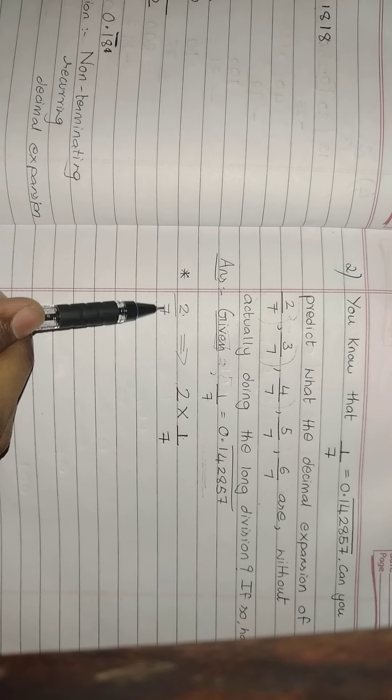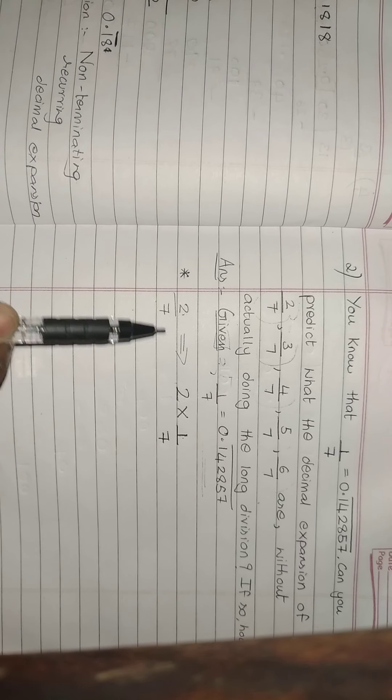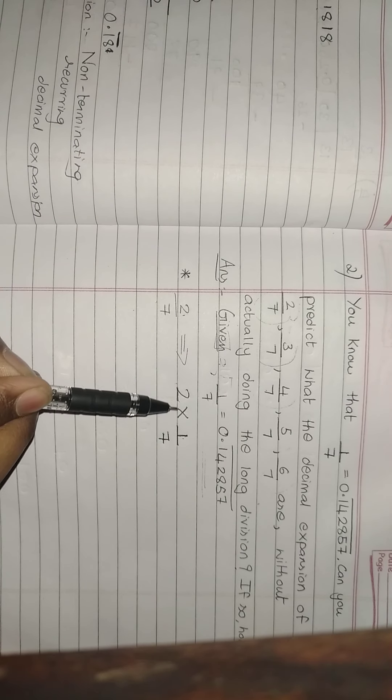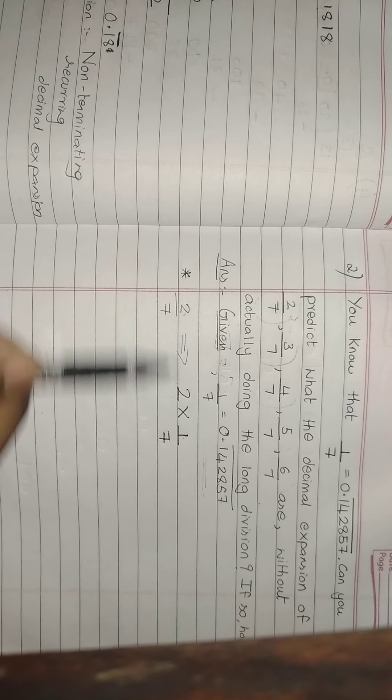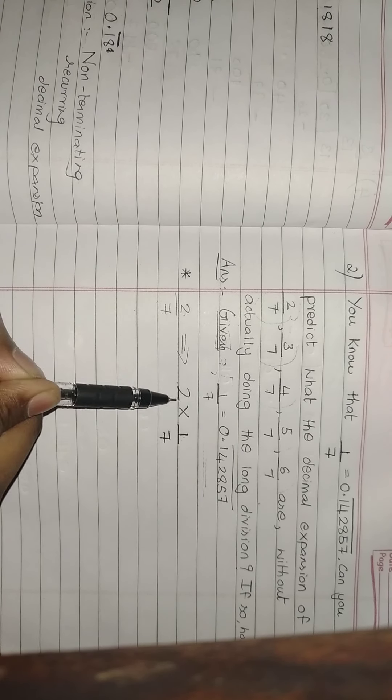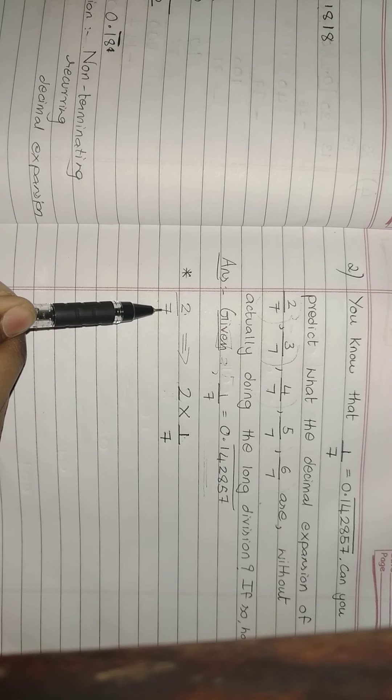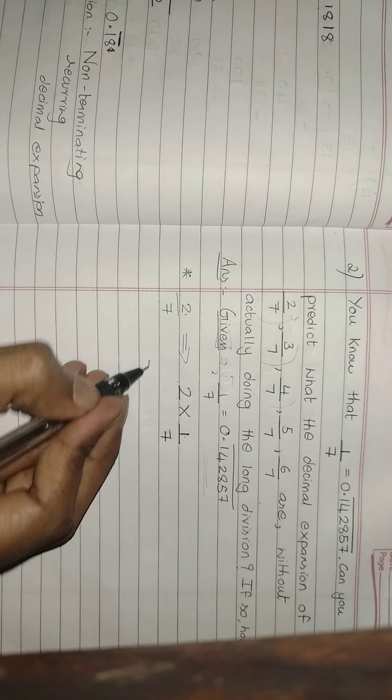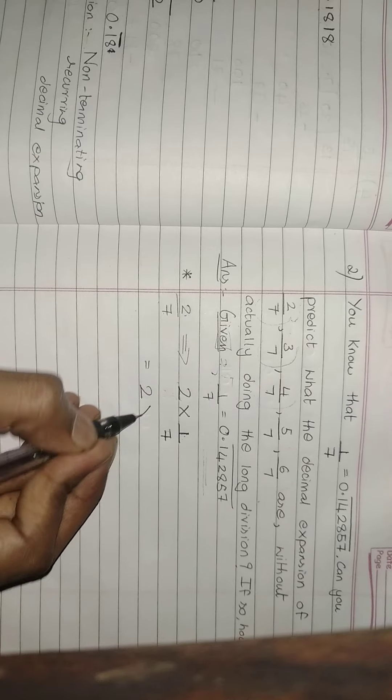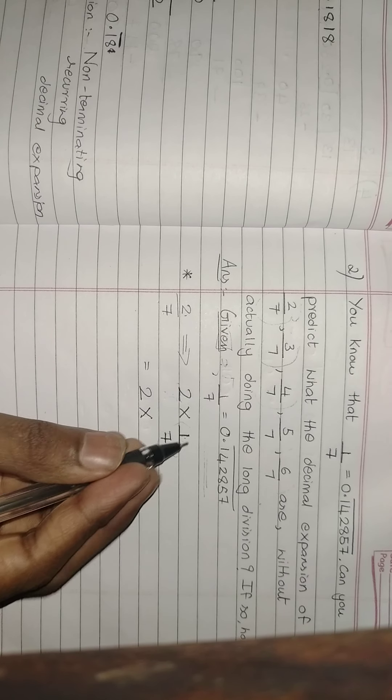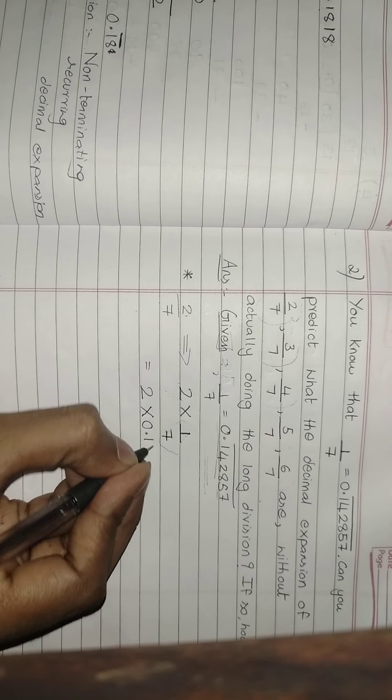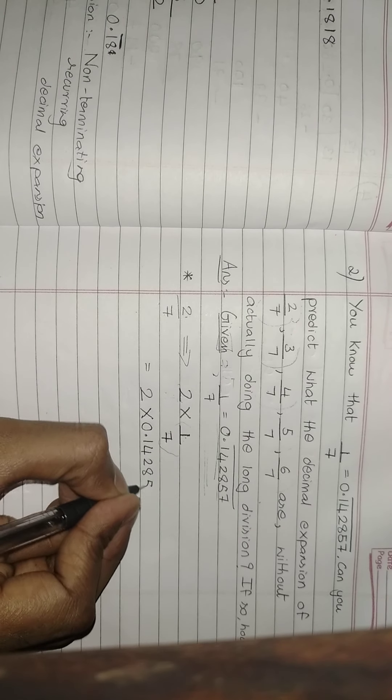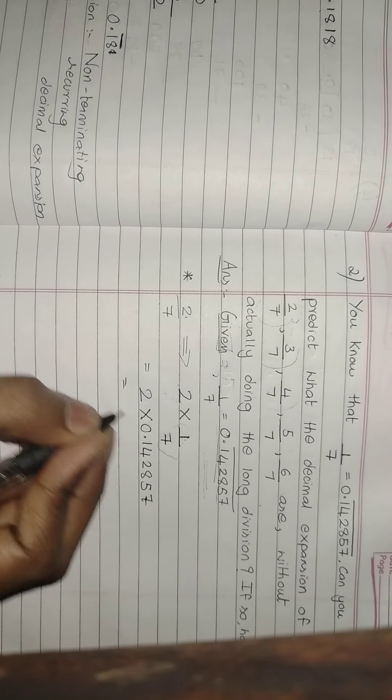So I can write 2 by 7 as it is very simple. Write along with me. I can write 2 by 7 as 2 into 1 by 7. What is 2 into 1 by 7? That is 2 by 7 only. 2 into 1 is 2, nothing means 1, 1 into 7 is 7. So I will write 2 as it is, into in place of 1 by 7, I am going to write this number. That is 0.142857. Now you multiply this.